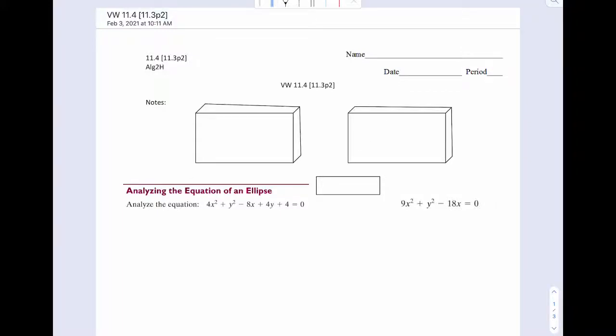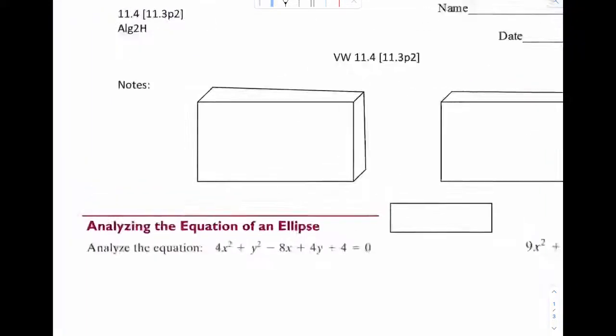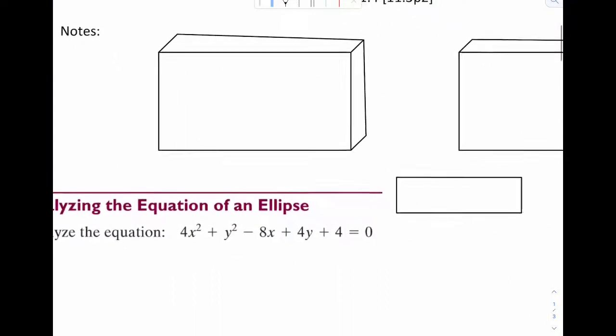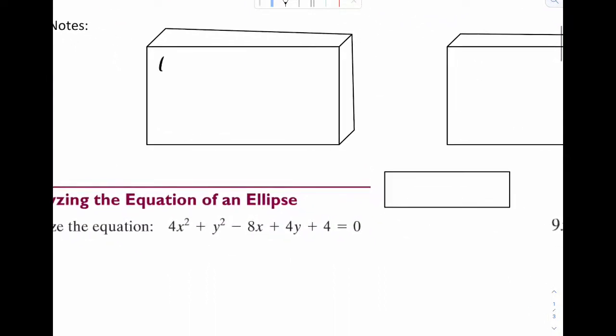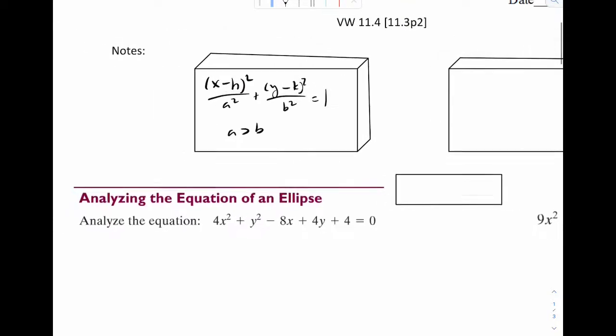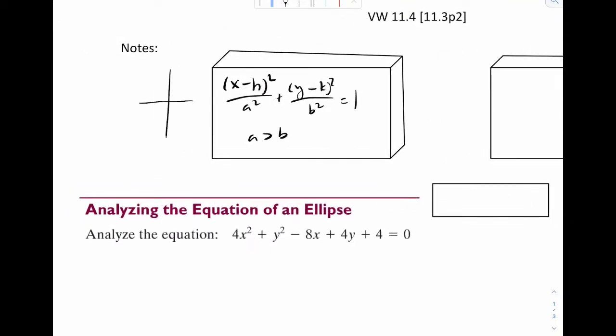Welcome to VW11.4. We're going to continue our study of ellipses today by first recapping our new formulas. Our first one is x minus h squared over a squared plus y minus k squared over b squared equals 1. Remember the assumption is a is greater than b. In this situation we have our football form.